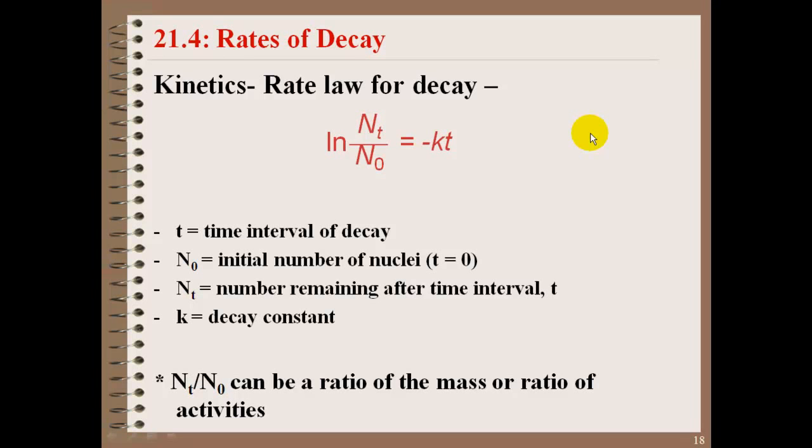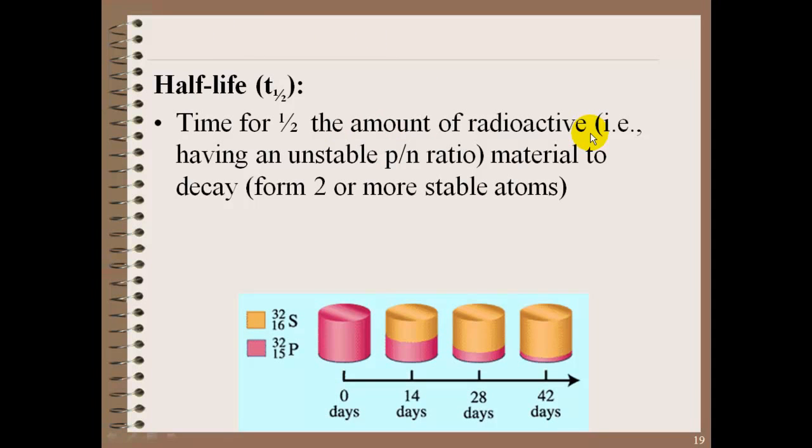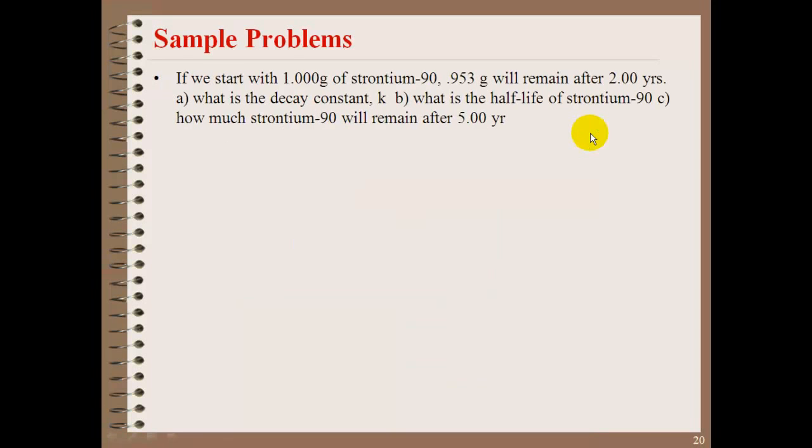Please note that our N sub t divided by N sub 0 can be a ratio of the mass or the ratio of activities. We're not really going to get into activities, so we're going to be looking more at masses. Our half-life is the time for half of the amount of a radioactive unstable proton-neutron ratio material to decay. So how long does it take for half of the substance to decay? And then how long does it take for the half of that to decay? And so forth and so on.